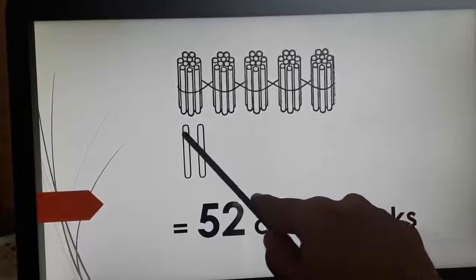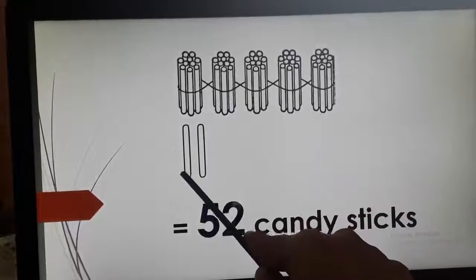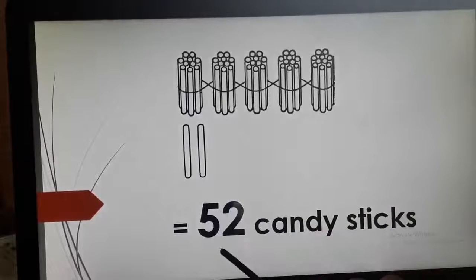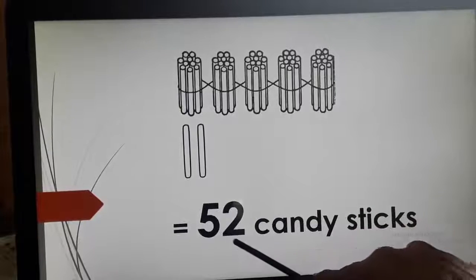Now, here 50 candy sticks plus 1 and 2. So, 50 and two, 52. 50 and two, 52.